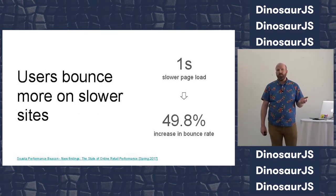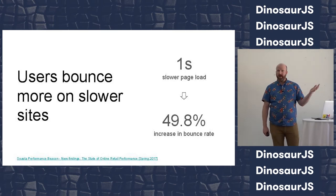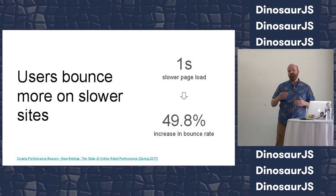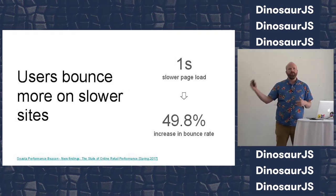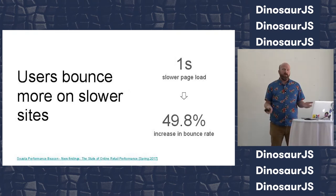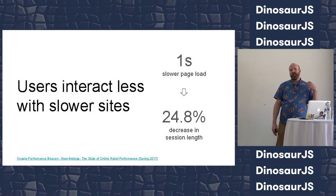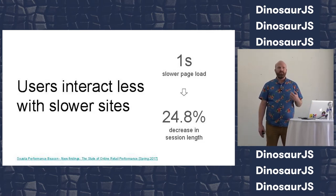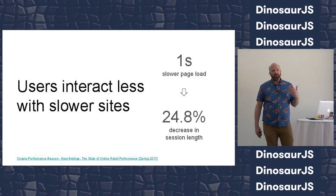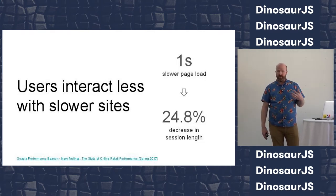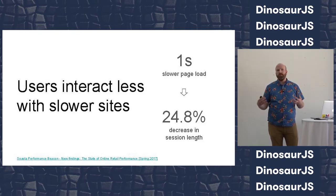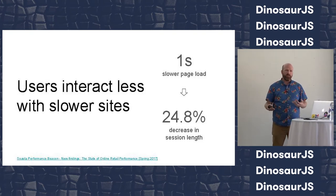The next thing they found is that users don't wait around for slow sites — they bounce. There's a clear relationship between slower sites and users being more likely to give up and leave. And the other finding, which actually surprised me, is that users interact more with faster sites. Their session length is longer, they click on more pages — meaning you have more opportunities to sell something, show more ads, and make users more likely to become loyal.